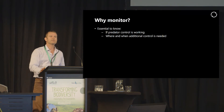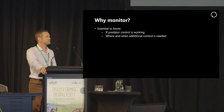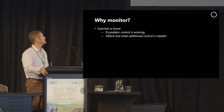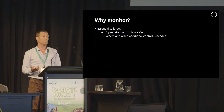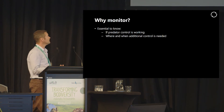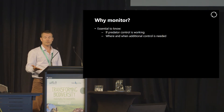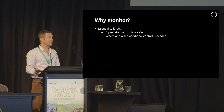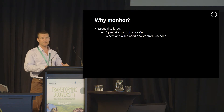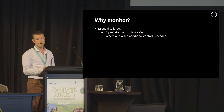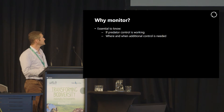So why is it important to monitor when we're doing pest control? For two main reasons. It's essential, first of all, to know whether what you're doing is actually working. You can be trapping or poisoning or shooting and expending a lot of time and resources, but unless that is actually reducing the population of the pests, then you're wasting your time and your resources. So it's absolutely imperative to know whether what you're doing is working.